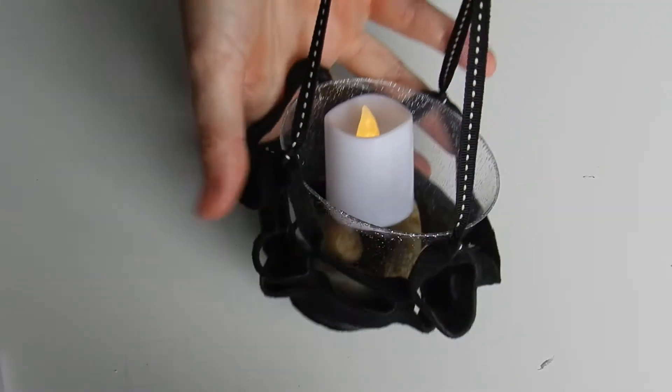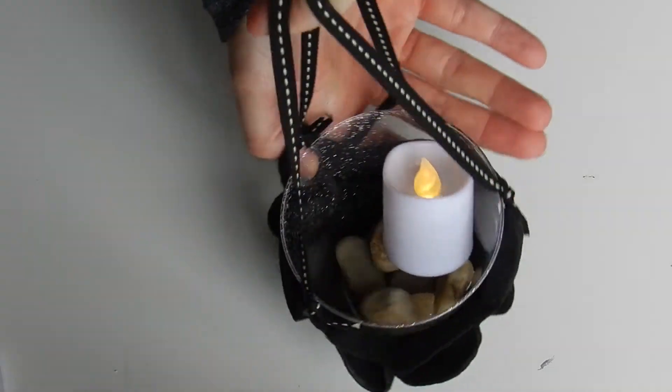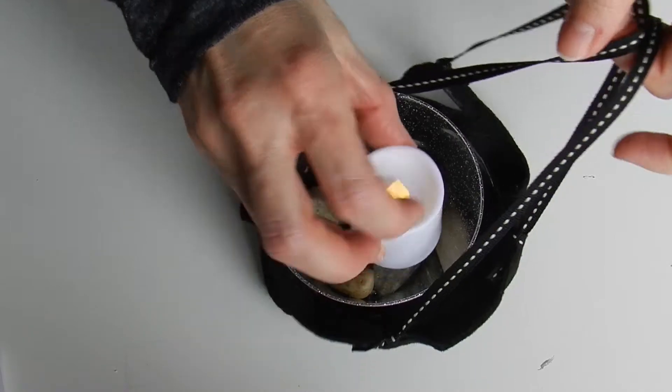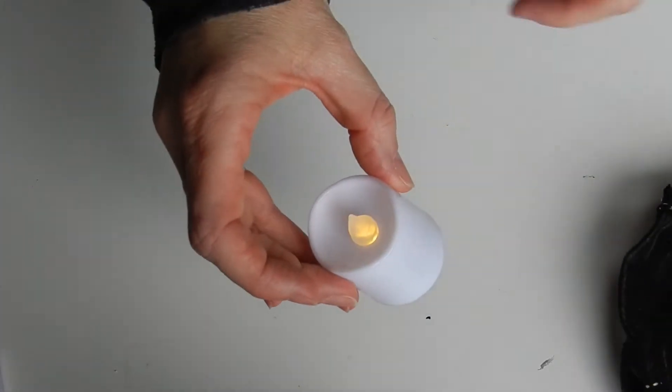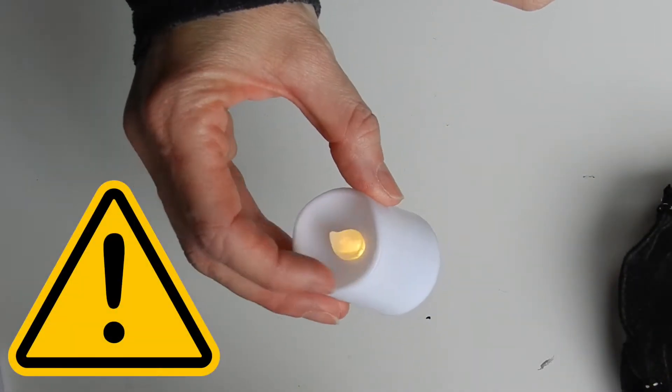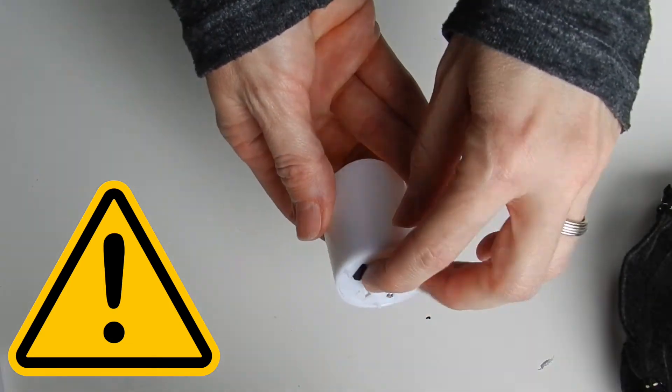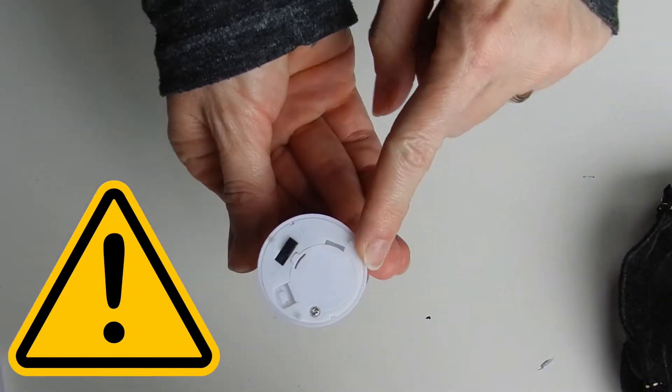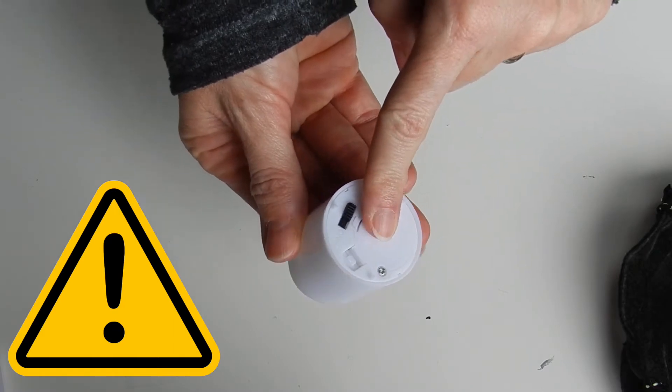Welcome to the Felt Lantern Take and Make for Teens. You'll notice that in your kit is a flameless candle. Please be aware you cannot use a regular lit candle for this craft. Felt is extremely flammable.